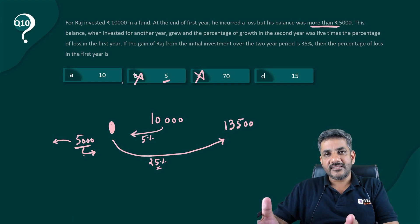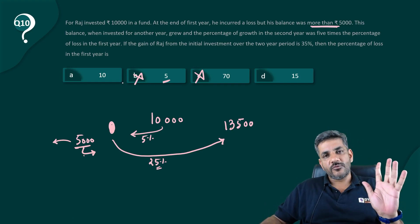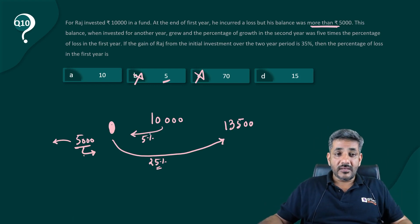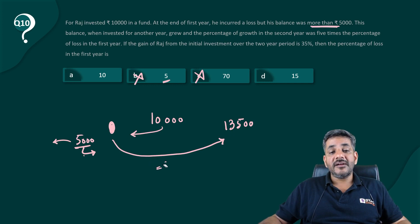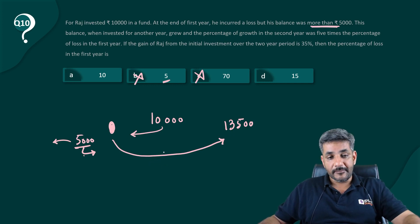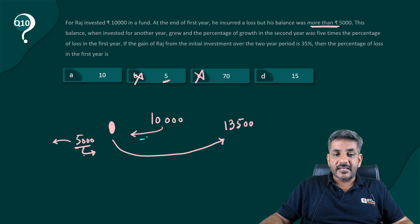What are we left with? 10 and 15. Try with anyone, if that satisfies that is the answer, if that does not satisfy the other one is the answer. Ultimately you just have to do one calculation. So let's try it for 10.